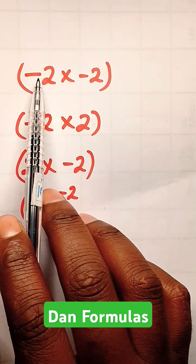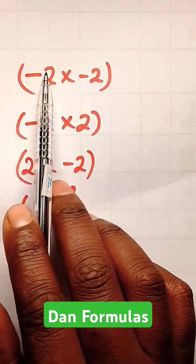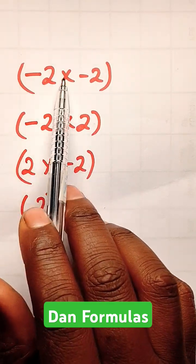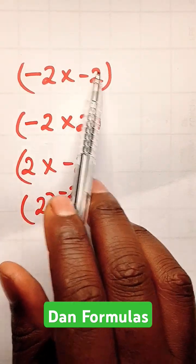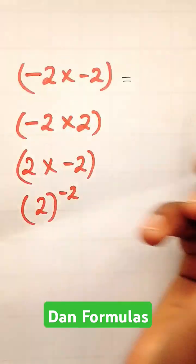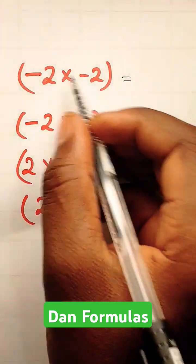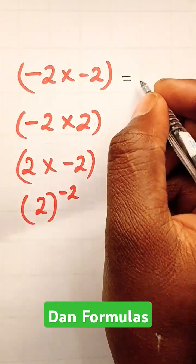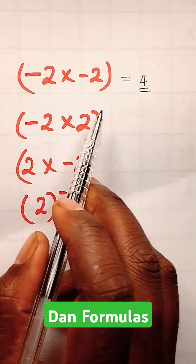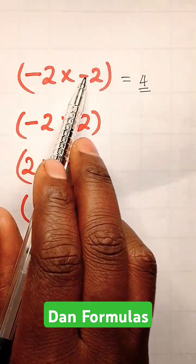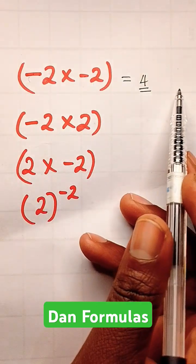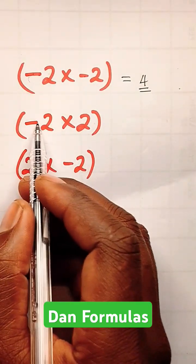Look at this question here. When we multiply negative times negative — negative 2 times negative 2 — negative and negative gives us positive. So 2 times 2 gives us positive 4. We have multiplied negative and negative, and negative 2 times negative 2 gives us positive 4.